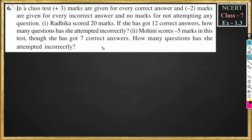The question says: in a class test, plus 3 marks are given for every correct answer, minus 2 marks are given for every incorrect answer, and no marks for not attempting any question.